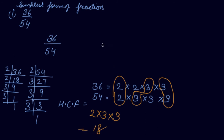So let's divide 36 by 18 for the numerator and 54 by 18 for the denominator. If we divide 36 by 18, we get 2. If we divide 54 by 18, we get 3. This was the first method: divide the numerator and denominator by their HCF in order to get the simplest form of the fraction.